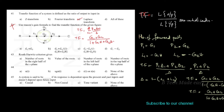Next question: What does the Routh-Hurwitz criterion give? Options are: number of roots on the right half of the s-plane, value of the roots, number of roots in the left half of the s-plane, or number of roots in the top half of the s-plane.